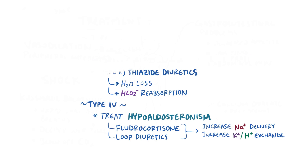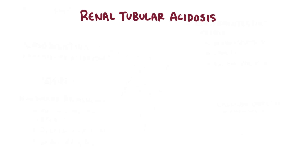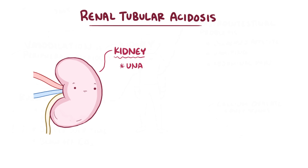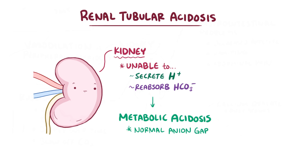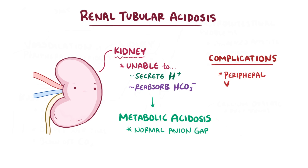As a quick recap, renal tubular acidosis describes a condition in which the kidney is unable to secrete acids or reabsorb bicarbonate from the body. This most commonly results in metabolic acidosis with a normal anion gap. If left untreated, the acidemia can cause peripheral vasodilation and shock.